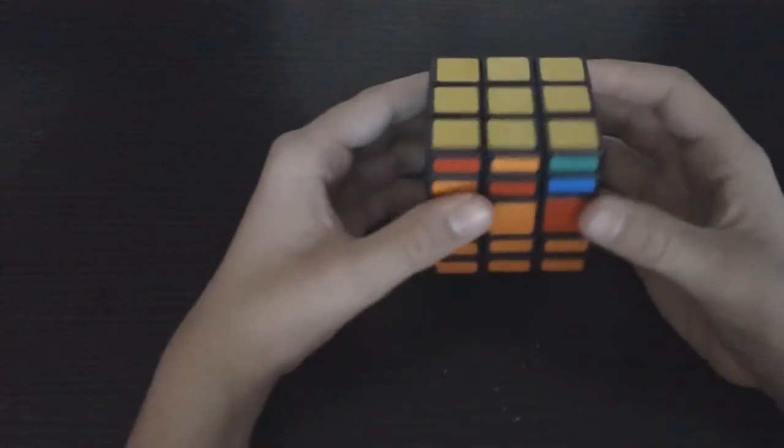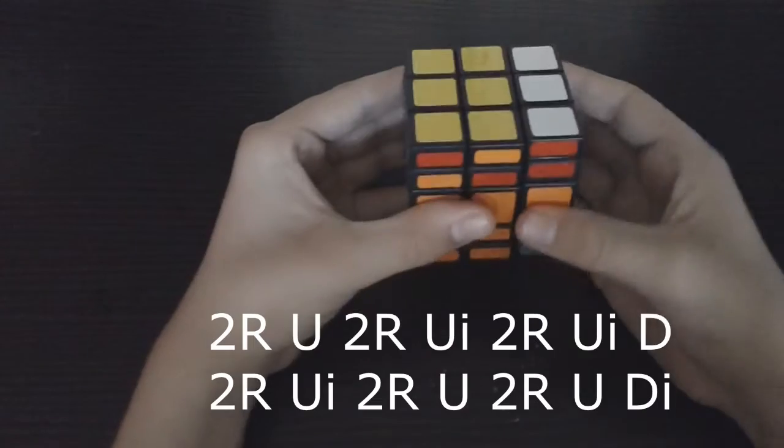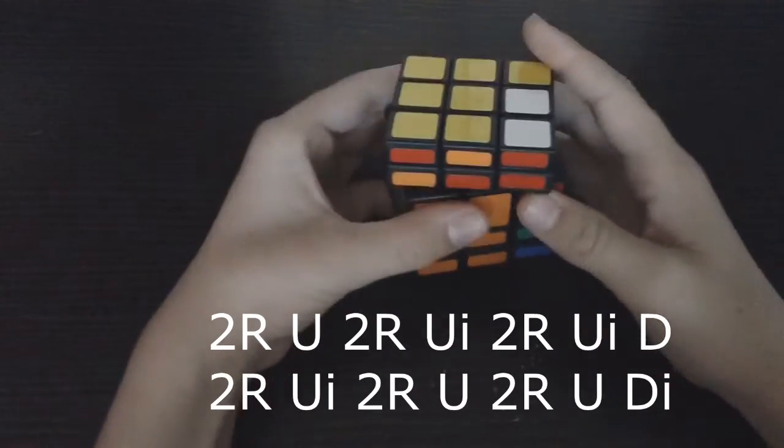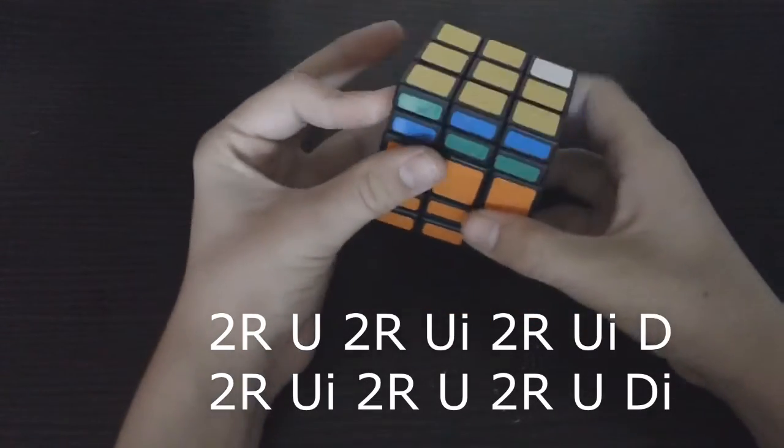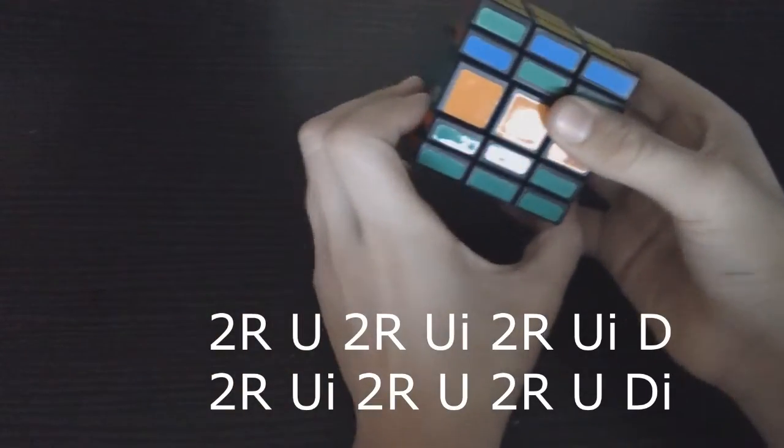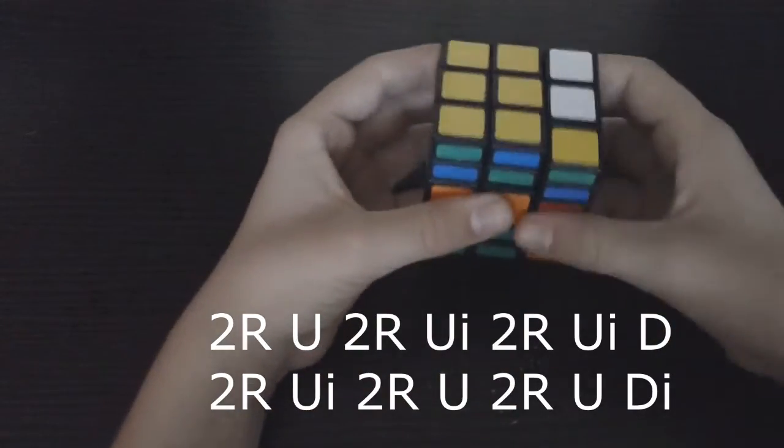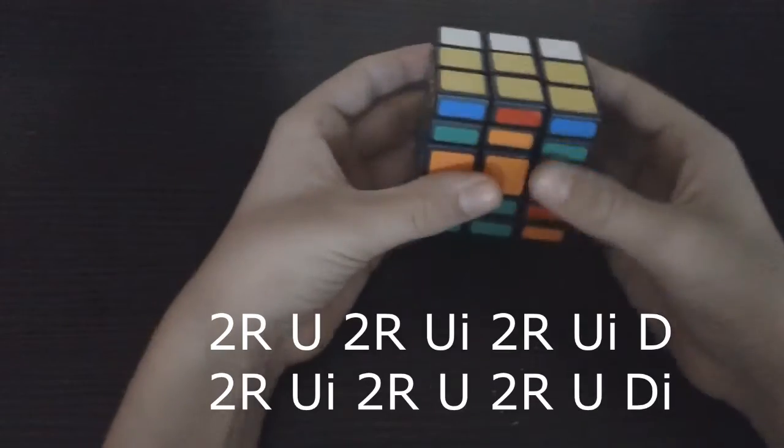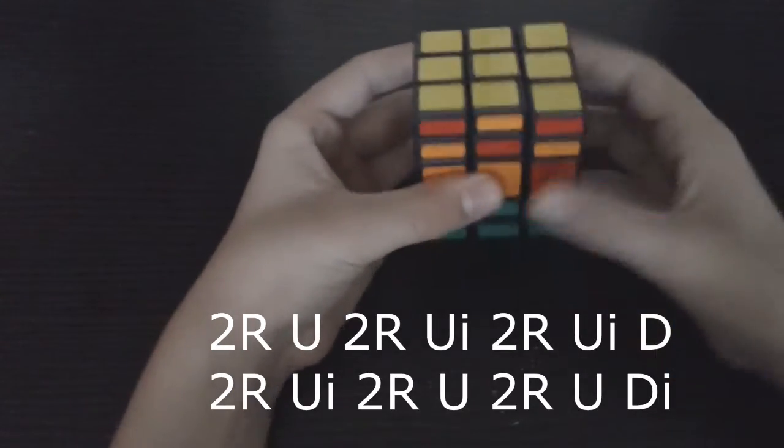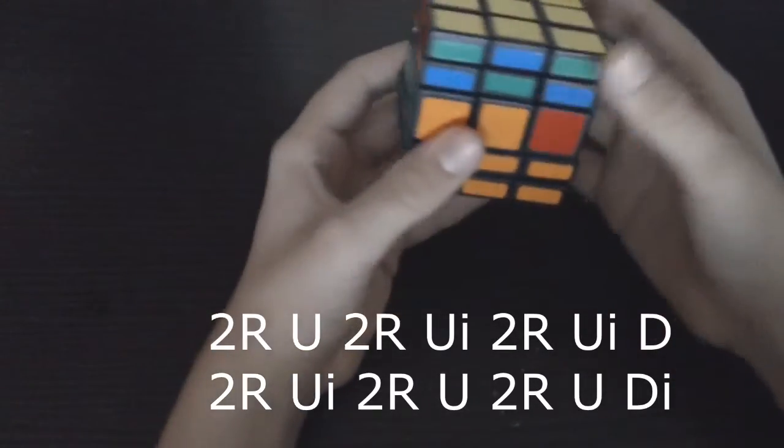And now the algorithm is R2, U, R2, Ui, R2, Ui, D, R2, Ui, R2, U, D, R2, Ui, R2, U, D, I.